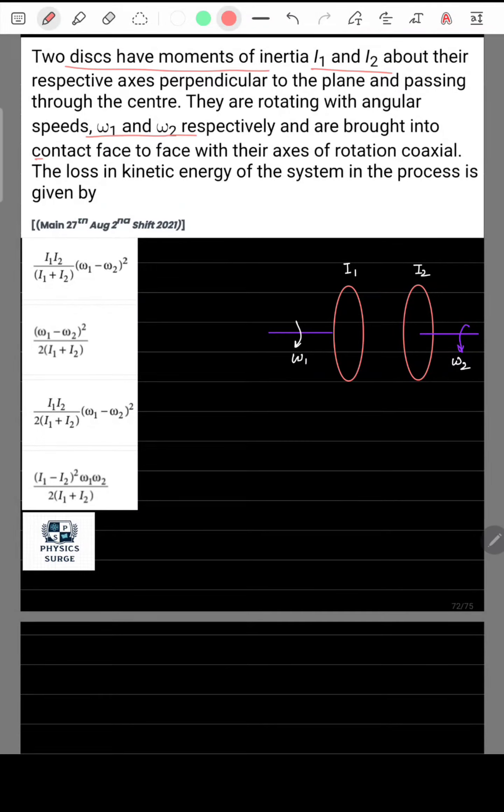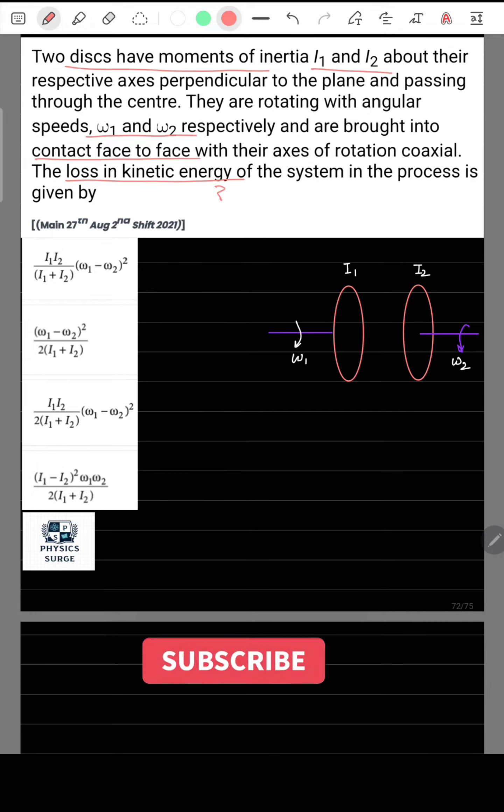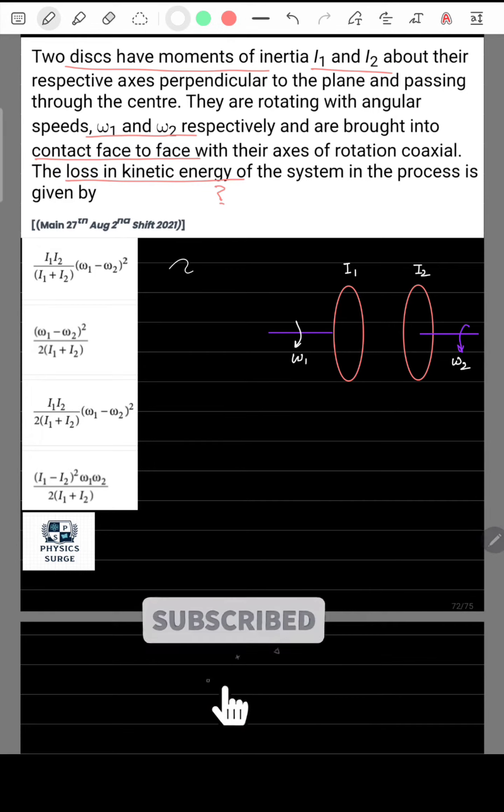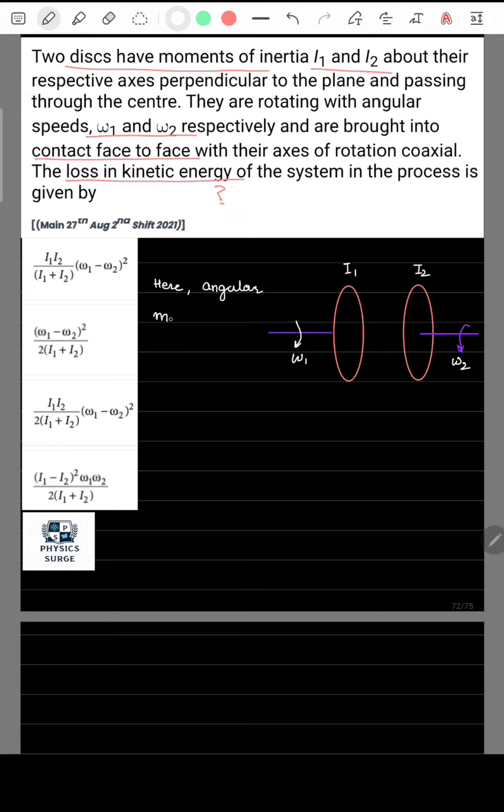In the previous question, there are two disks given of moment of inertia i1 and i2 rotating with angular speeds of omega 1 and omega 2. The two are placed in face-to-face contact and asked how much will be the loss in the kinetic energy of the system.